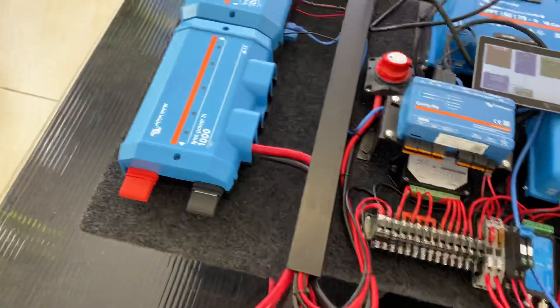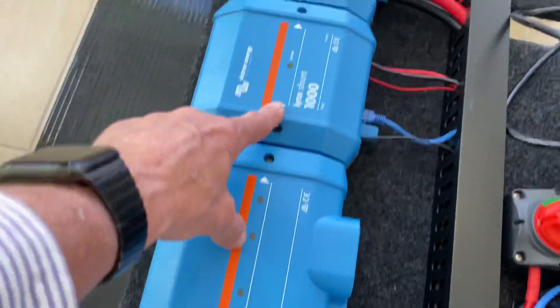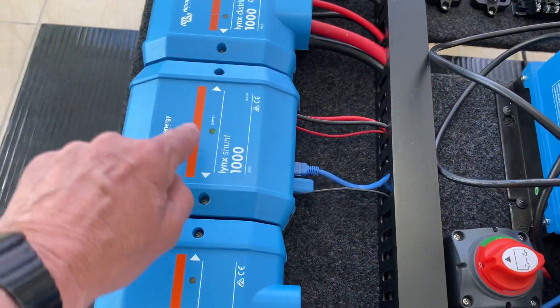Including the relays, it's incredible. The power comes in to a Lynx Power In from the batteries, then it goes through a Lynx Shunt and out to a Lynx Distributor which distributes the power.